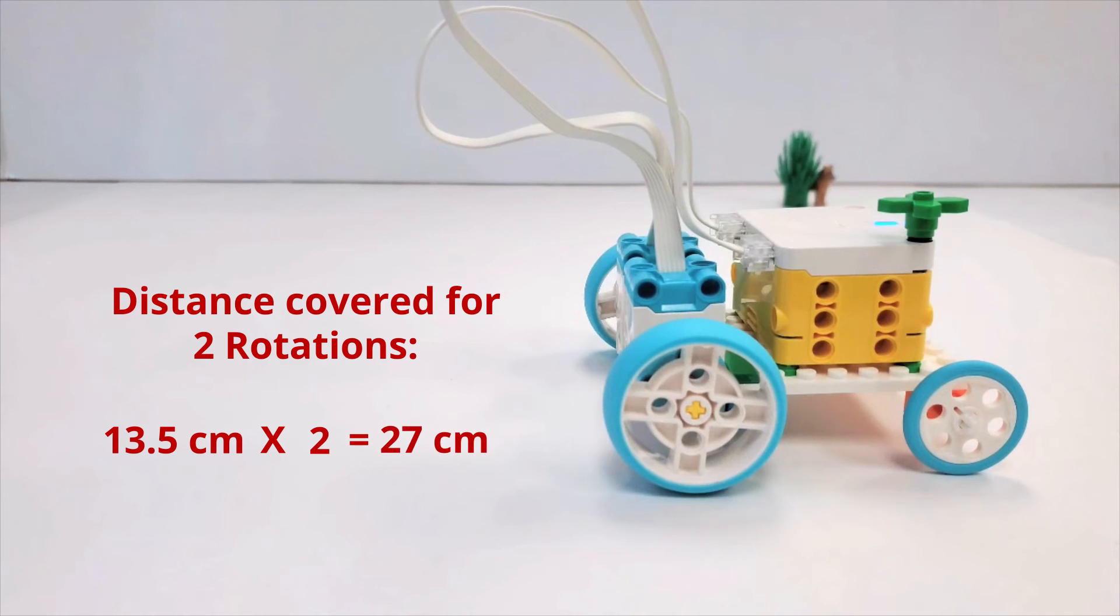This multiplication gives us the result of Iris' movement, which is 27 centimeters. By considering these insights, we gain a better understanding of Iris' linear movement and the relationship between rotations and distances traveled.